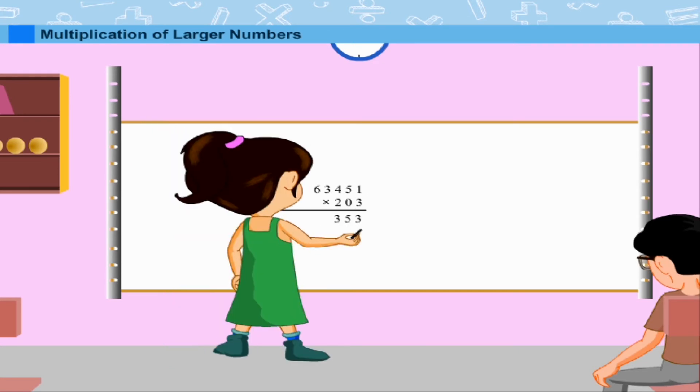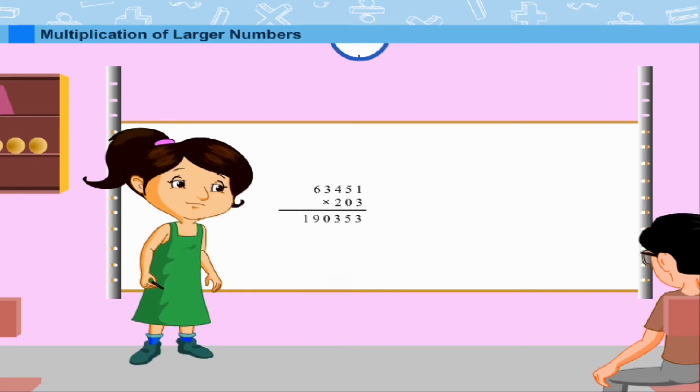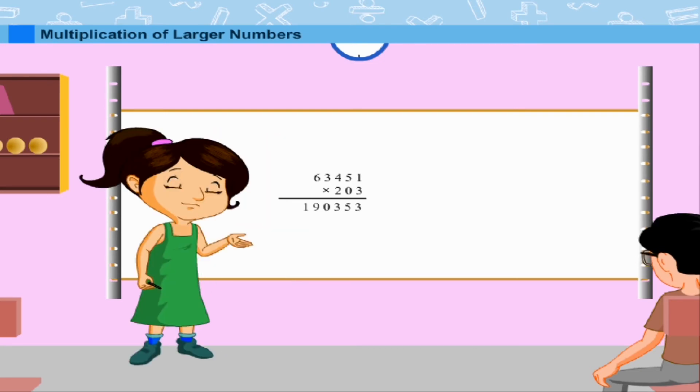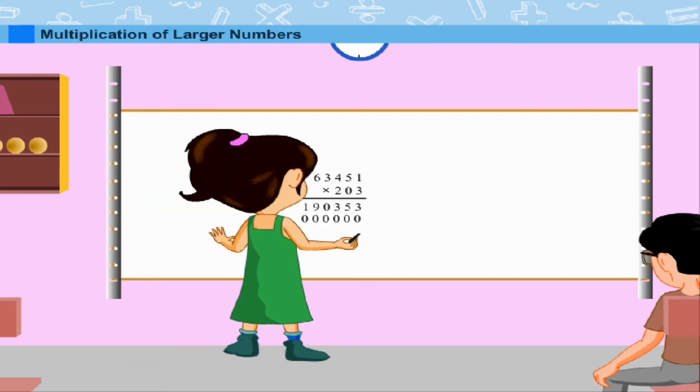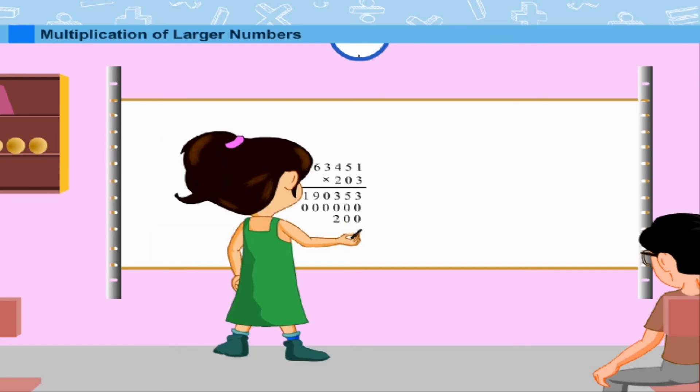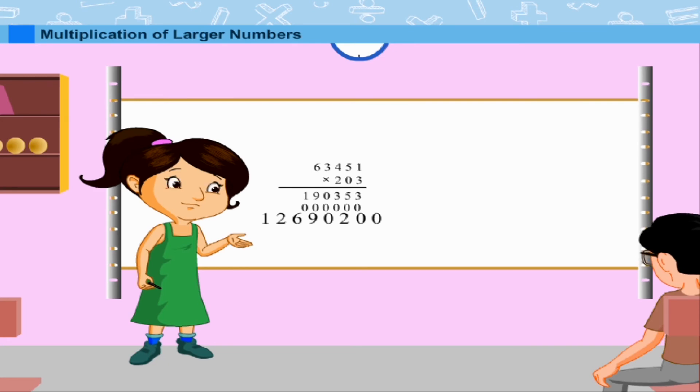which gives 1,90,353. Then she multiplies 63,451 by 0, which gives 0. Now she multiplies 63,451 by 200, which gives 1 crore 26,90,200.